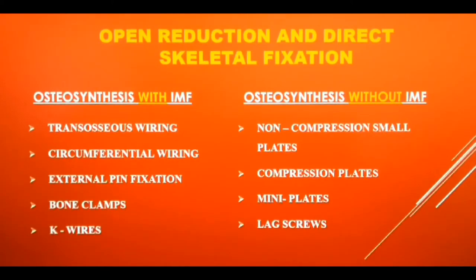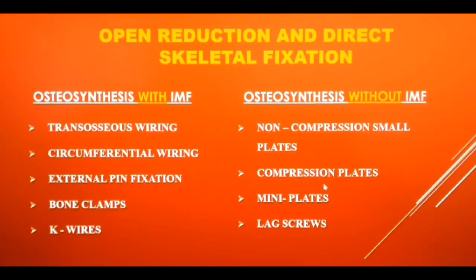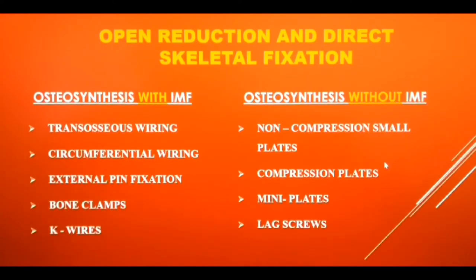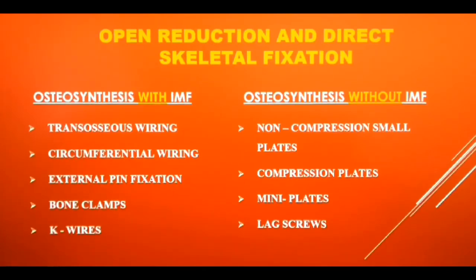Once you have opened and exposed the fracture site, you first reduce the fracture in its anatomical position. After reduction, you may use any of these techniques to achieve stabilization. Osteosynthesis can be done with or without IMF. Osteosynthesis simply means stabilization or joining of the two fracture ends using a bone implant — be it a plate, screw, pin, clamp, or wire — you are using a bone implant to stabilize or fix the fracture ends.